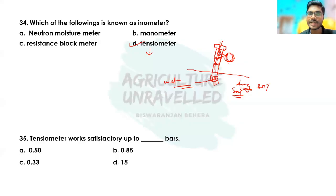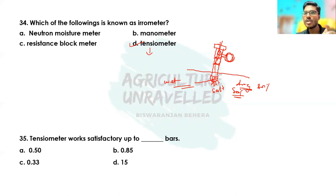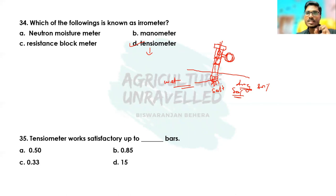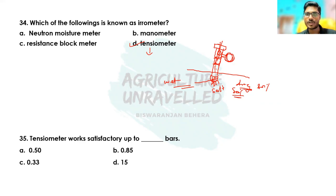Remember: tensiometer never measures osmotic potential. This is because salts cannot penetrate the porous cup, so salts will not affect the water quantity inside the tensiometer. That is the reason it is not affected by salt content. Hence, tensiometer measures only soil water potential or soil water tension and remains unaffected by salt or osmotic potential.